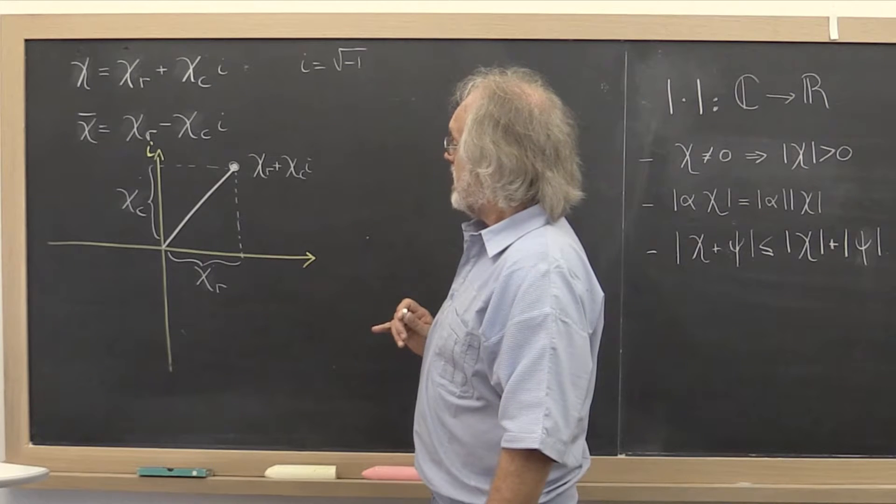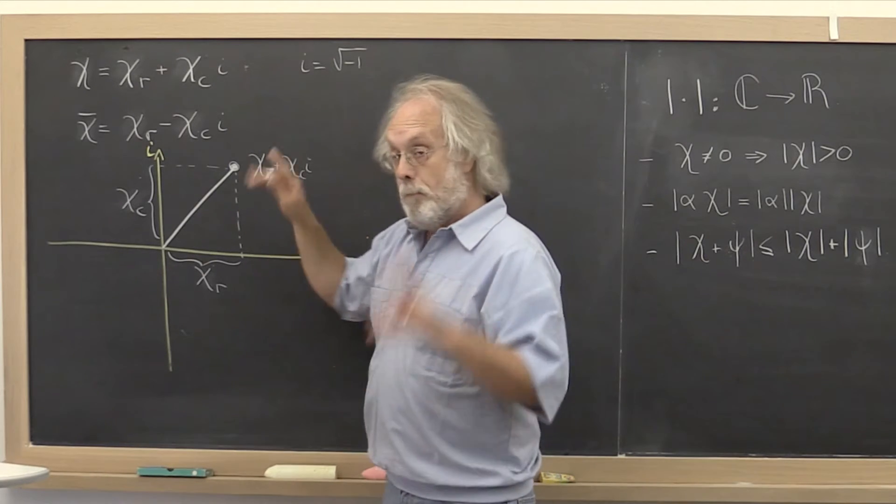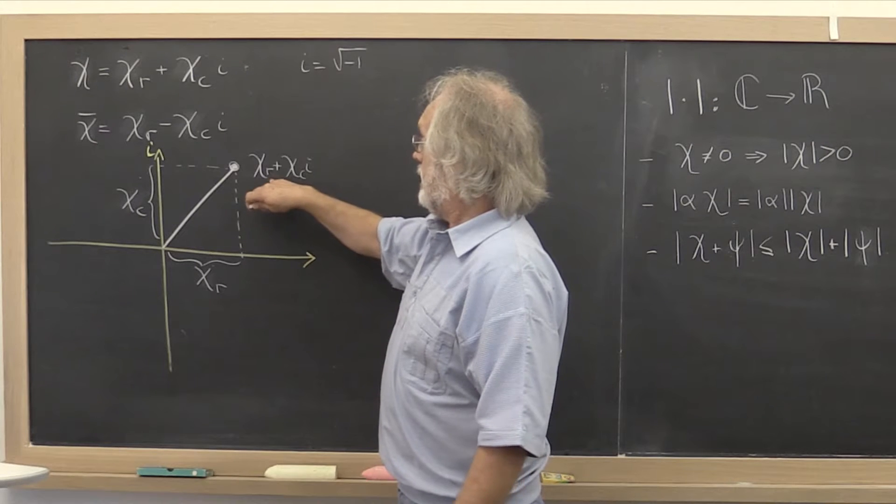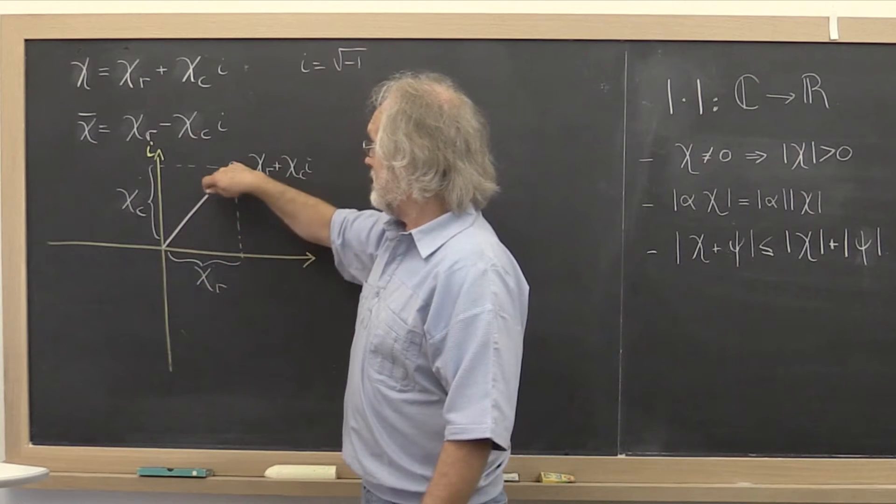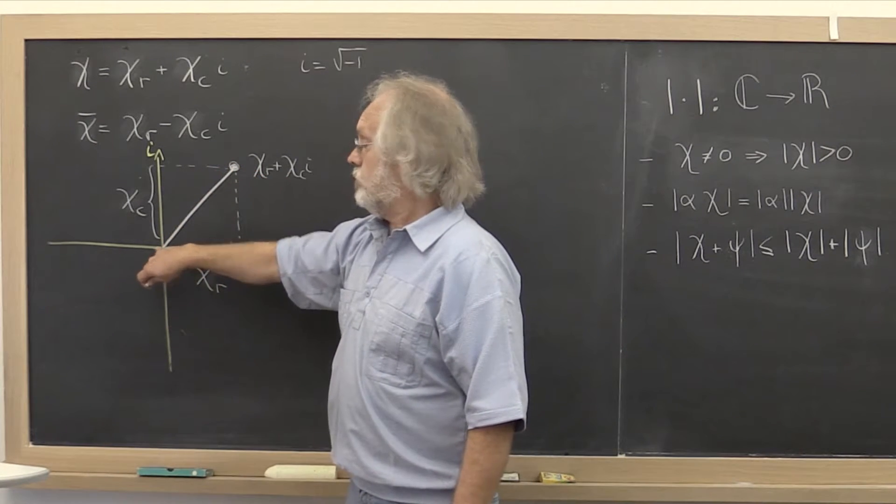Now, the magnitude of the complex number, then, is the distance from that number to the origin. And somewhere you learned about the Pythagorean theorem, and you may have been introduced to this as the Euclidean length.